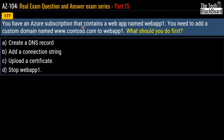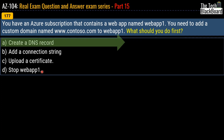Question 177: You have an Azure subscription that contains a web app named WebApp1. You need to add a custom domain name www.contoso.com to WebApp1. What should you do first? Options: Create a DNS record, add a connection string, upload a certificate, or stop WebApp1. The correct answer is option A, create a DNS record.